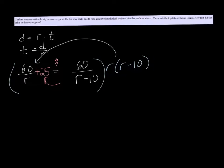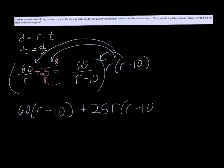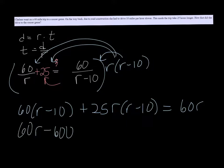So you've got to distribute that to all parts. Starting on the left side, the r's are going to divide out, and I'm just going to get 60 times r minus 10, plus 25r times r minus 10, equals 60r. And then if I distribute, I get 60r minus 600, plus 25r squared minus 250, equals 60r.